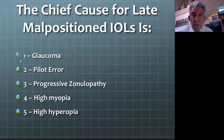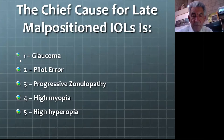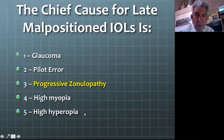Let's take a look at late malpositioned IOLs. The chief cause for late malpositioned IOL is progressive zonulopathy — the majority of you suggested this, and I do tend to agree. When we consider those conditions that lead to progressive zonulopathy, they include the exfoliation syndrome.